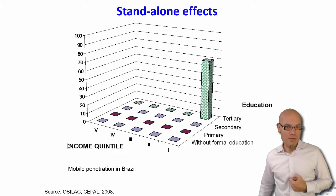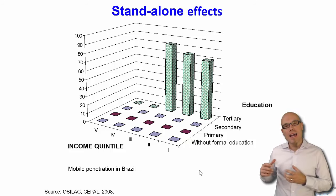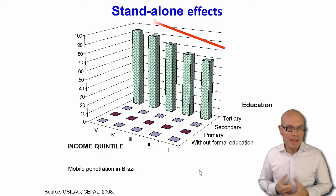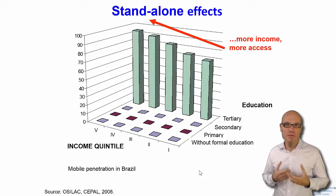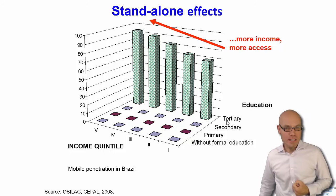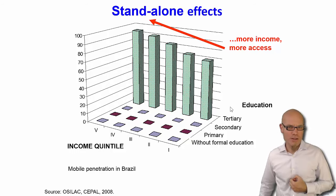Here you have the income segments of Brazil — the poorest 20% of society, the richest 20% of society — and you see that as income goes up, mobile phone access and usage also goes up. So more income means more access. All of these people here have a college degree, and you can see that income is what matters within this group.